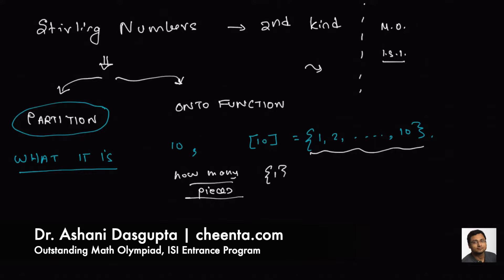So this is the one extreme case where you split 10 numbers into 10 partitions. The other extreme is this: there is only one partition and basically all the 10 numbers are in the same partition. So these are the two extremes.